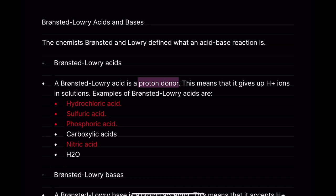Examples of Bronsted-Lowry Acids include hydrochloric acid, sulfuric acid, phosphoric acid, carboxylic acid, nitric acid, and H2O. The ones highlighted in red are what we consider strong acids. A strong acid is determined by how strongly it dissociates H+ ions in solution — the more strongly it dissociates H+, the stronger the acid.